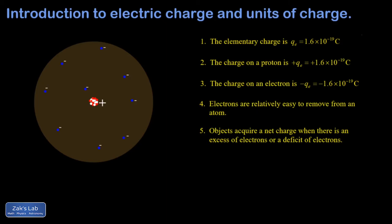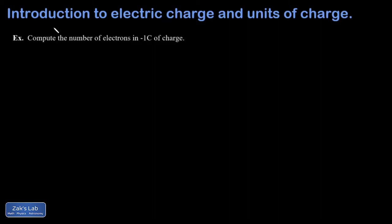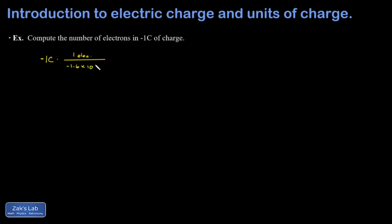To wrap things up, we'll do a quick calculation involving a unit conversion with charge. The question is: compute the number of electrons in negative one coulomb of charge. I start with negative one coulomb and multiply by a conversion factor — one electron for every negative 1.6 times 10 to the negative 19 coulombs. The minus signs cancel out, the coulombs cancel out, and I'm left with electrons. The result is 6.25 times 10 to the 18 electrons.